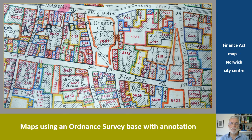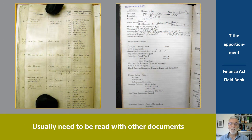Specially produced maps are still produced, for example for road schemes or planning applications. Today they normally use a base of an Ordnance Survey map, and that's been the case for a long time. This example is of a map prepared under the Finance Act of 1910, which created the increment value duty tax on land. The huge task was undertaken surveying and valuing properties, and even if the tax itself was not a success, those records are today a valuable resource for historians. Maps such as these, and tithe and enclosure plans, have to be read in conjunction with other documents, such as the Finance Act field books, enclosure awards, or tithe apportionments.